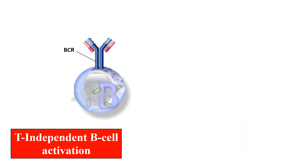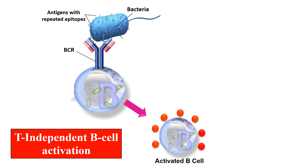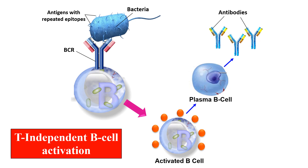The second type of activation is T-independent activation, where the B cell does not require T cells. The antigen directly binds to the antibody receptors on the B cell, and this binding alone activates the B cell. It then produces plasma B cells which make antibodies to kill the antigen. Importantly, in T-independent B cell activation, no memory B cells are formed during this type of activation.